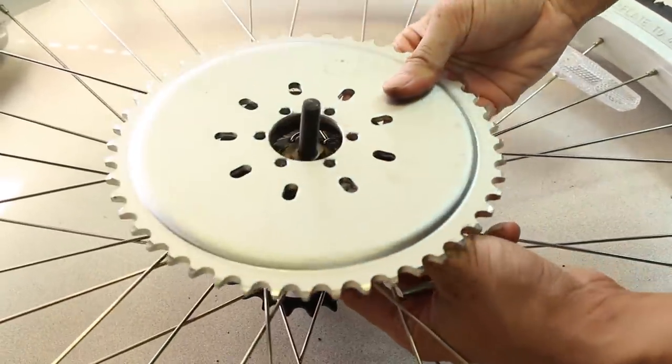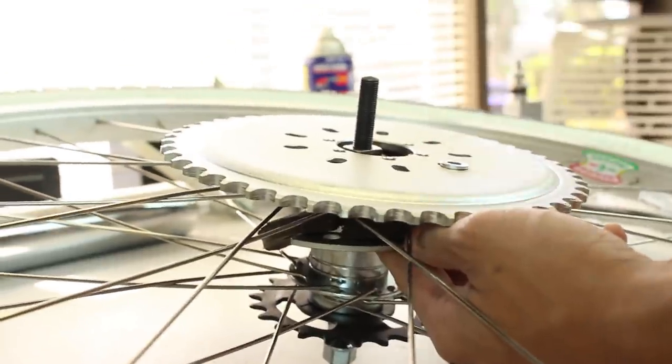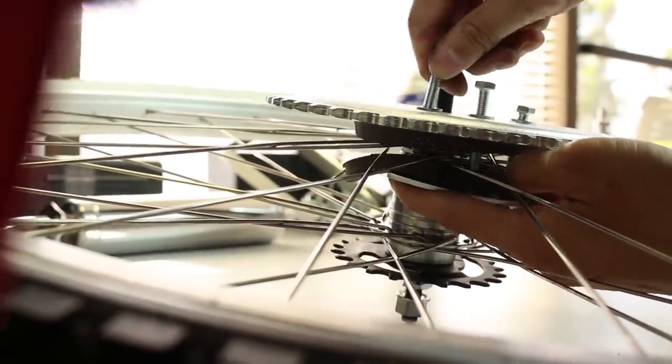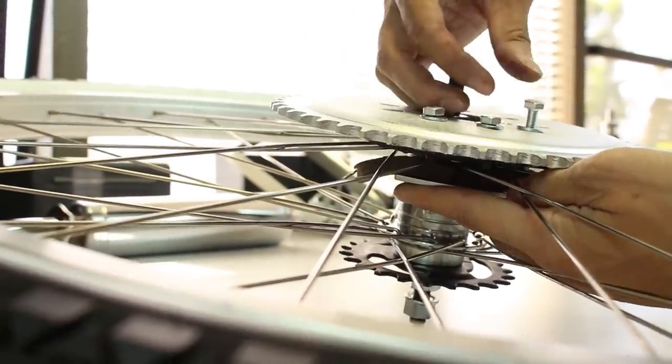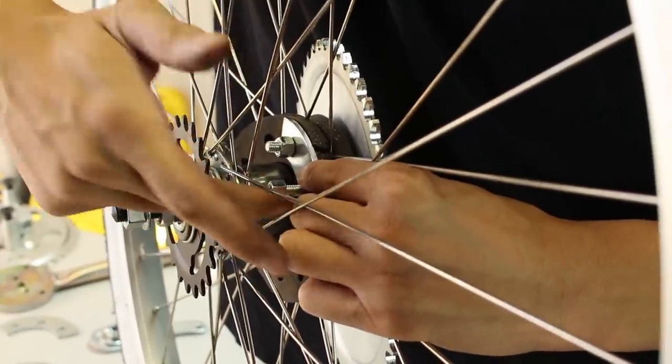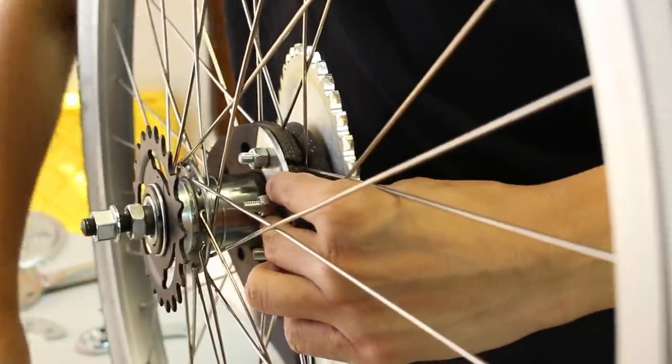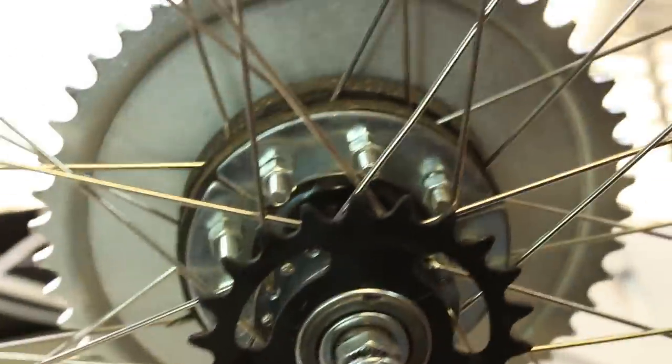Remember to use washers and lock washers. What we like to do is hand thread the nuts onto each bolt to hold them in place. This ensures that the bolts do not fall out when completing the sprocket installation. This is an added step and not necessary, but it helps with the process.